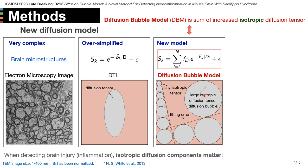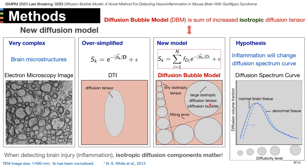It is trying to separate the signals from complex structures into different diffusion levels. Each level is one bubble — it's like a kid blowing bubbles. So we named it the Diffusion Bubble model. By linking the diffusion volume fractions of these bubbles, we can plot diffusion spectrum curves for brain tissues. If there are changes or injuries in the brain tissues, the curve will change.